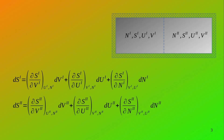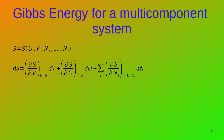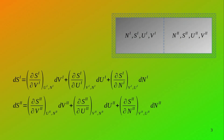Therefore we can write, as in the previous equation, for the left subsystem (subsystem 1): dS₁ equals (∂S₁/∂V₁)dV₁ — that is the change in entropy with respect to volume — plus the change in entropy with respect to internal energy, and the third term is the change in entropy with respect to the number of moles. A similar equation can be written for subsystem 2 on the right side.